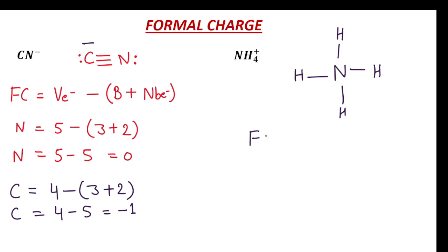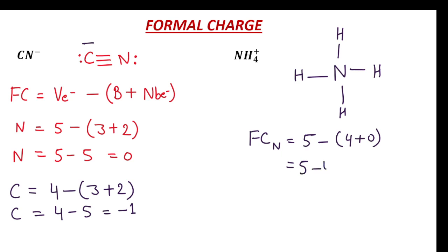Formal charge for nitrogen in NH₄⁺: number of valence electrons for nitrogen is 5, minus number of bonds which is 4 (there are four N-H bonds: 1, 2, 3, 4), plus number of non-bonded electrons which is 0, because there are no non-bonded electrons. So 5 minus 4 equals plus 1. Formal charge for nitrogen in NH₄⁺ is +1.